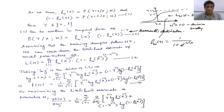The probability of any sample given x belonging to class y, parameterized by w, is equal to h(x)^y times (1 - h(x))^(1 - y).